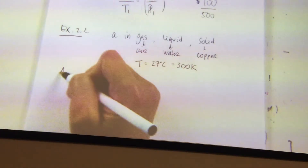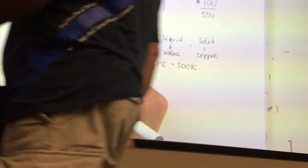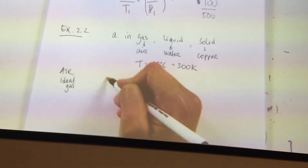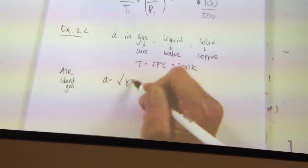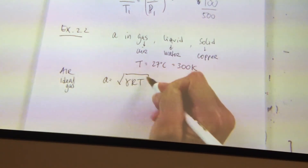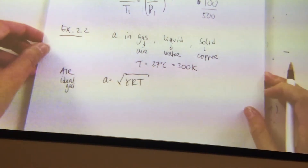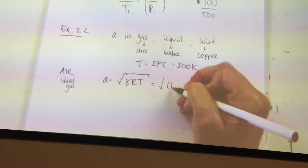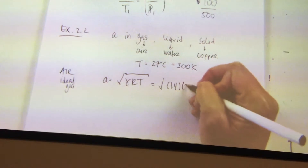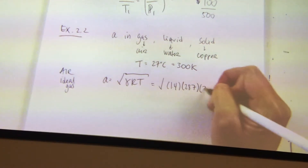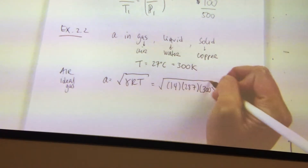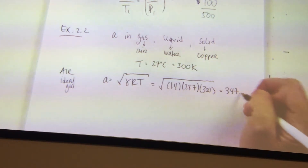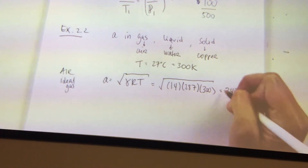So for air — basically what we're going to be dealing with in this class — the speed of sound A equals the square root of gamma R T. We're going to use that equation a lot. Just plug in our values: gamma is 1.4 for air, R is 287, and T is 300. And that will be around 347.19 meters per second.